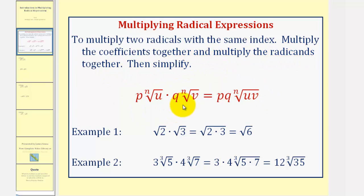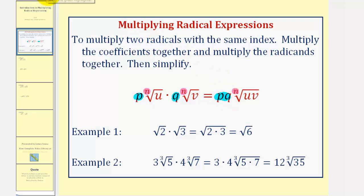Looking at our notes, notice how the index n is the same, and therefore we multiply the coefficients together, which would be p and q, the numbers outside the radicals. Then we multiply the radicands together, which in this case are u and v, the numbers underneath the radicals, and then we simplify.